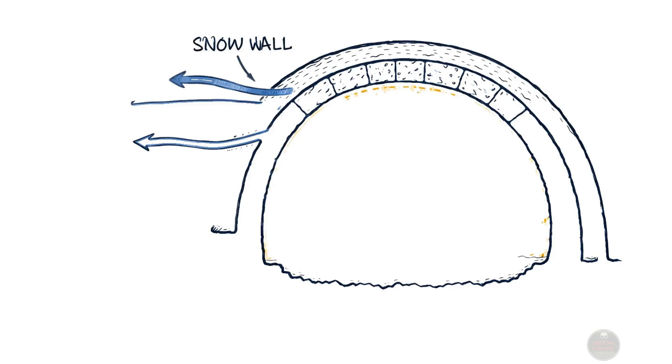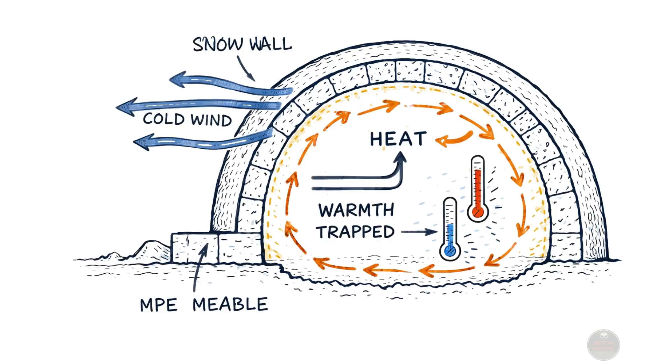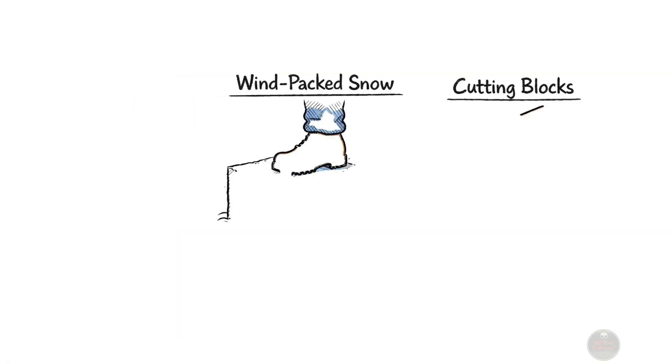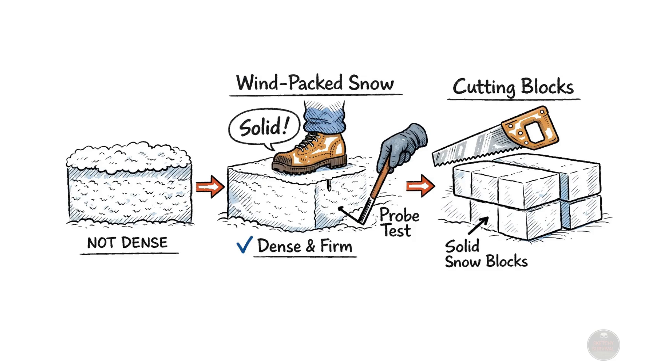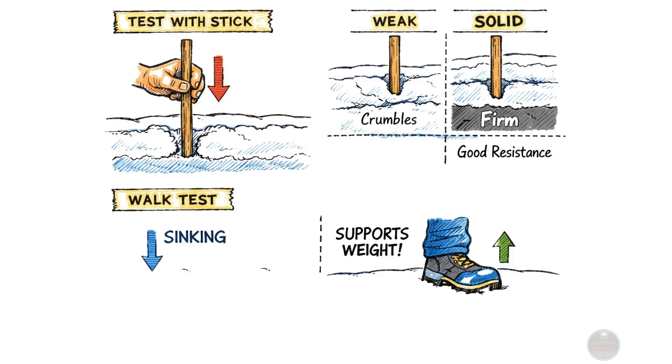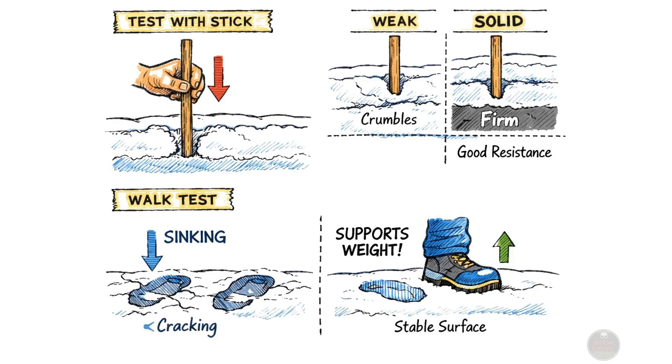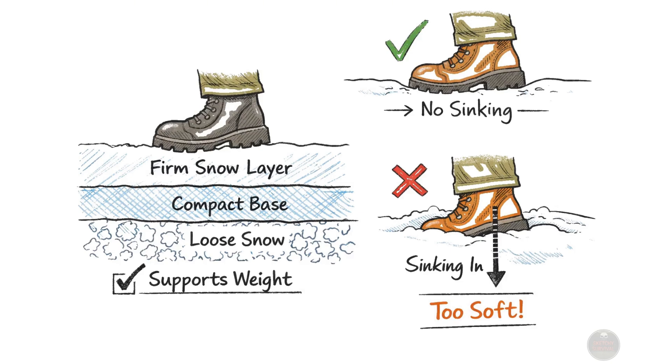Now that you understand the invisible thermodynamics keeping you warm, we must move to the actual physical construction. Building that perfect igloo requires finding wind-packed snow, which is dense enough to cut into solid structural blocks. You can easily test the snow quality by probing it with a stick or simply walking across the surface. This method helps determine if the snow firmly holds your weight, indicating sufficient compaction.